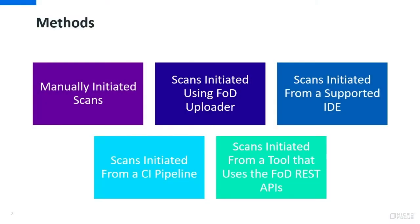There are five ways in which you can perform a static scan. You can do a manually initiated scan, you can use our FOD Uploader tool, you can do so from a supported IDE, you can integrate a scan with your CI pipeline, or you can create a tool that uses the FOD REST APIs. So let's look at each of these one by one.